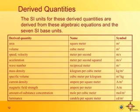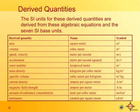Derived quantities are quantities you get when you combine base units. If you're talking about area, that's derived from the base unit of length — a length times a width is an area, and volume is length times width times height. Speed or velocity, how fast something moves, is based on the meter and the second, so you'll have meters per second.